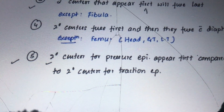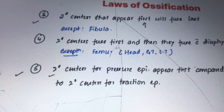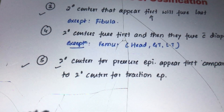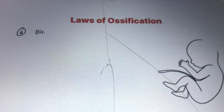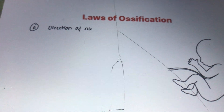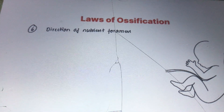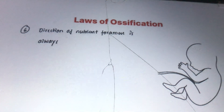This is what is referred to as the law of union of epiphysis. The sixth law of ossification relates to the direction of the nutrient foramen, which is always directed away from the growing end of the bone.